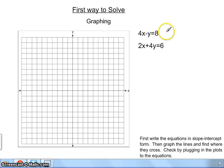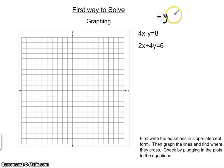Okay, so with the first equation, we are going to subtract the 4x and get negative y minus 4x plus 8, and then we divide it by negative 1, both sides by negative 1, and get y equals 4x minus 8.